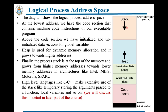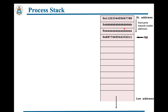The stack grows from higher addresses to lower addresses in architectures like Intel, MIPS, Motorola, and SPARC. High-level languages like C and C++ make extensive use of the process stack for temporarily storing arguments passed to functions, local variables, and so on. The stack operates in last-in first-out fashion — the last item pushed will be the first removed. The RSP register, also called the stack pointer, always points to the top of the stack and contains the address of the last inserted item.